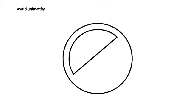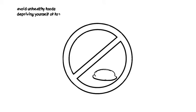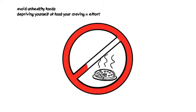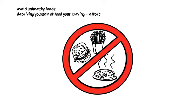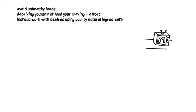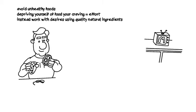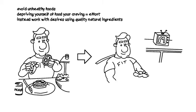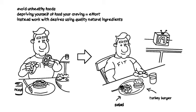Most diets today preach the strict avoidance of unhealthy foods. Depriving yourself of food that you're craving takes effort, and that effort adds up. Attempting to avoid thoughts or cravings has actually been proven to make those urges stronger. The solution is to work with your desires. Instead of denying yourself, for example, a Big Mac you're craving, learn how to cook a healthier burger at home using appropriate portions of quality natural ingredients.